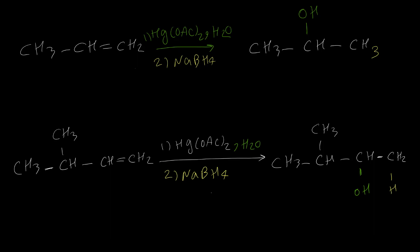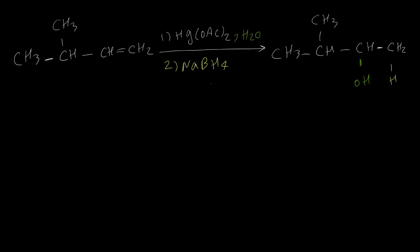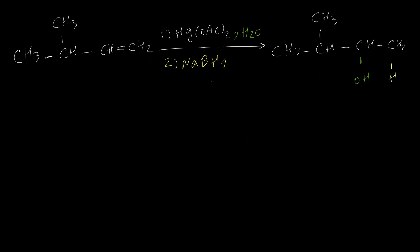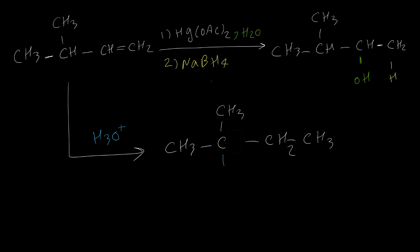Addition of water by oxymercuration reaction is different from hydration of an alkene using acidic conditions. One of the best advantages of this reaction is that it doesn't produce any carbocation, so it doesn't go through carbocation rearrangement. If we try to hydrate an alkene by acidic conditions, the major product will differ because first it makes a secondary carbocation and then rearranges to a tertiary carbocation. For more detail, you can watch my video on hydration of alkene.